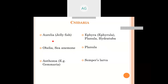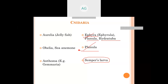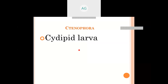In Cnidaria, going to Aurelia or Obelia: the Planula larva is very important. In Obelia there is the Planula larva, and in Thoja there is Semper's larva. In Scyphozoa (Aurelia), the larvae include Ephira and Planula — all familiar forms. In Ctenophora there are Cydippid larvae.